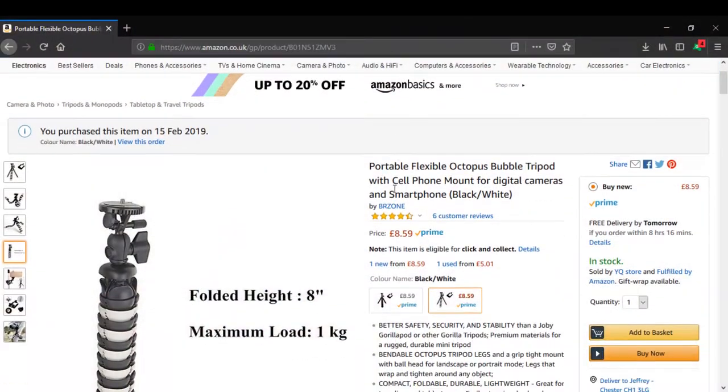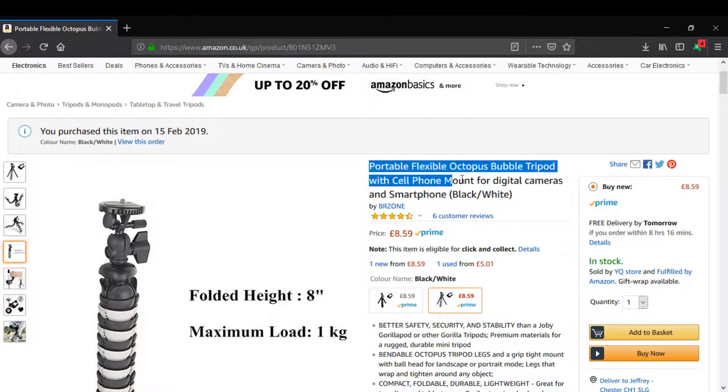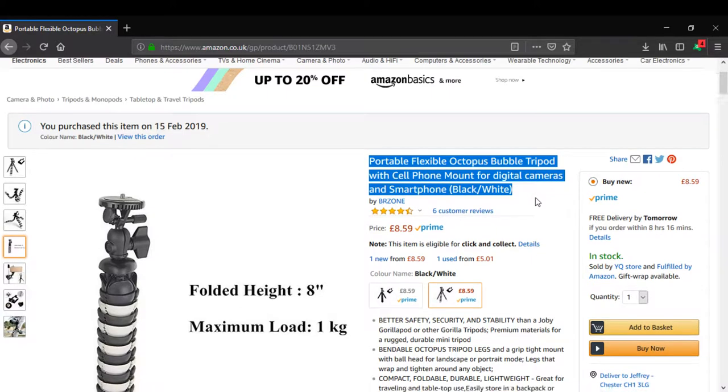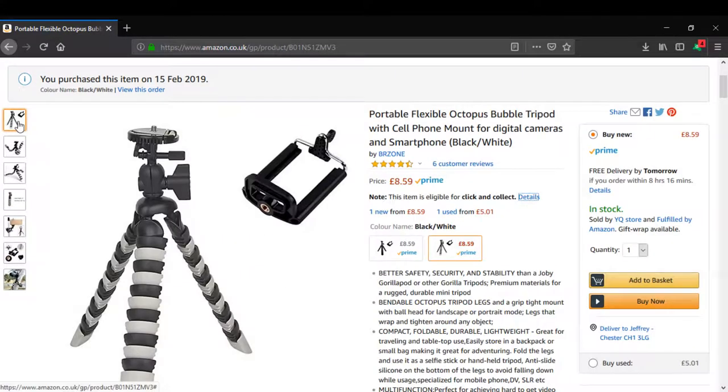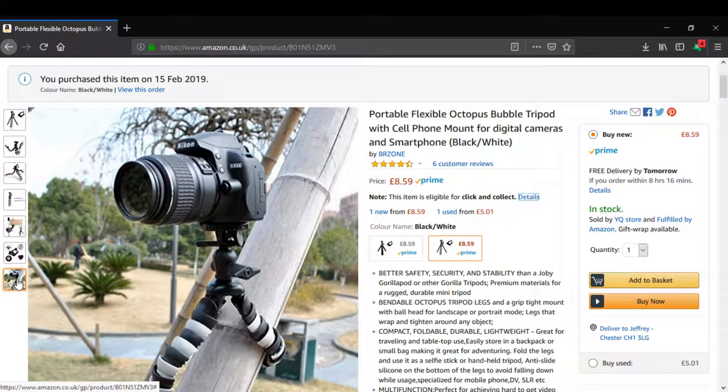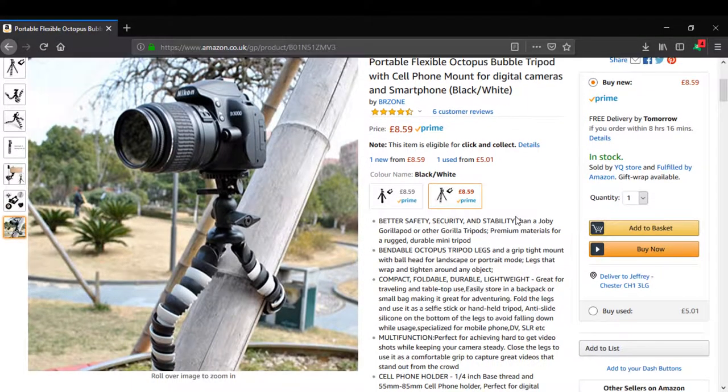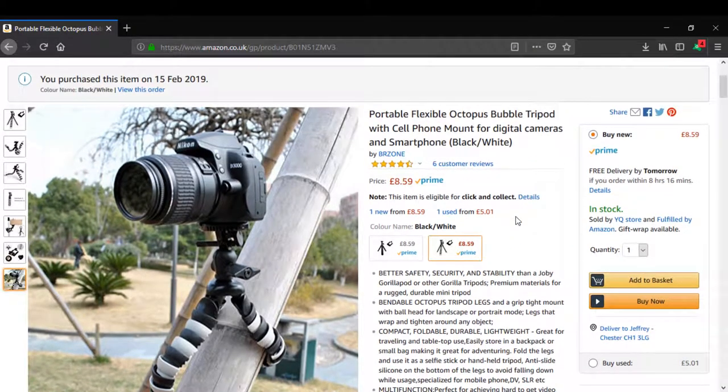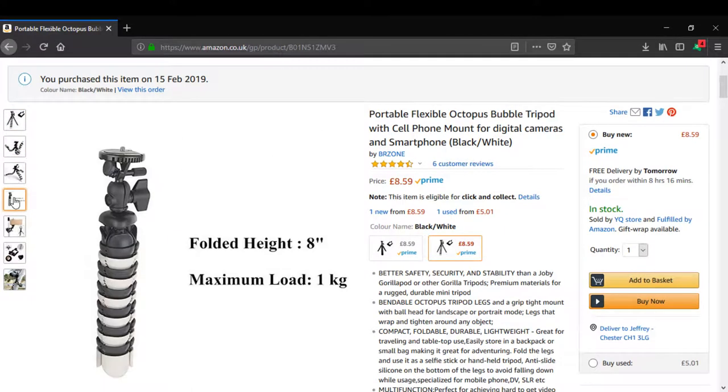This is the portable flexible octopus bubble tripod. You can see it's around eight pounds fifty-nine, but I did buy this particular one secondhand so it's cheaper. I think it's just around four or five pounds for this used one. I'm not really particular about it.